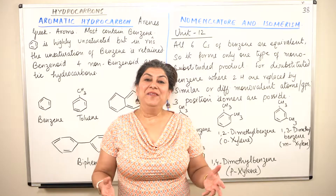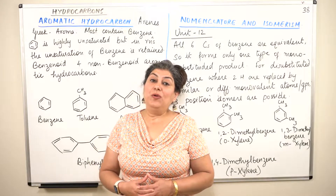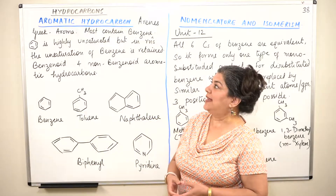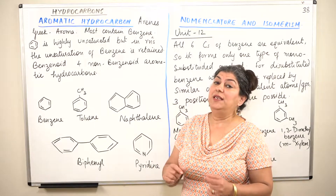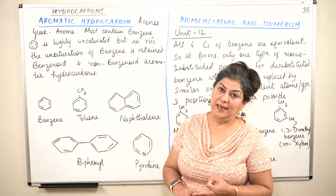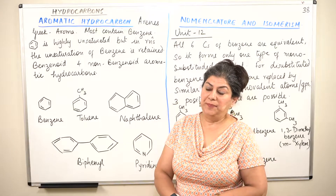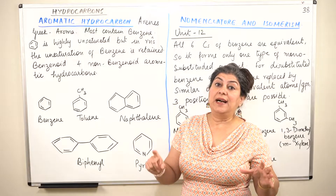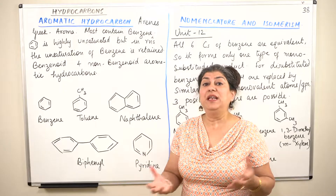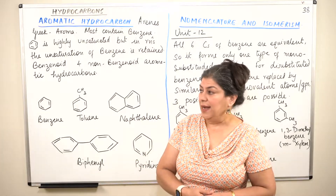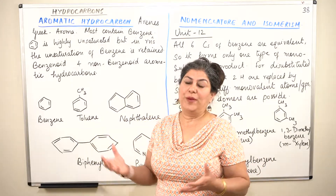Hello, I'm Seema and welcome to part 38 of the chapter hydrocarbons. In this video I'm going to introduce the next category of hydrocarbons — aromatic hydrocarbons. Till now in this chapter we have studied about alkanes, alkenes and alkynes. All of them are straight chain hydrocarbons which may be saturated or unsaturated. Aromatic hydrocarbons on the other hand are cyclic in nature, highly unsaturated, and their behavior is very different from aliphatic or straight chain hydrocarbons, which is why a separate class called aromatic hydrocarbons has been made.